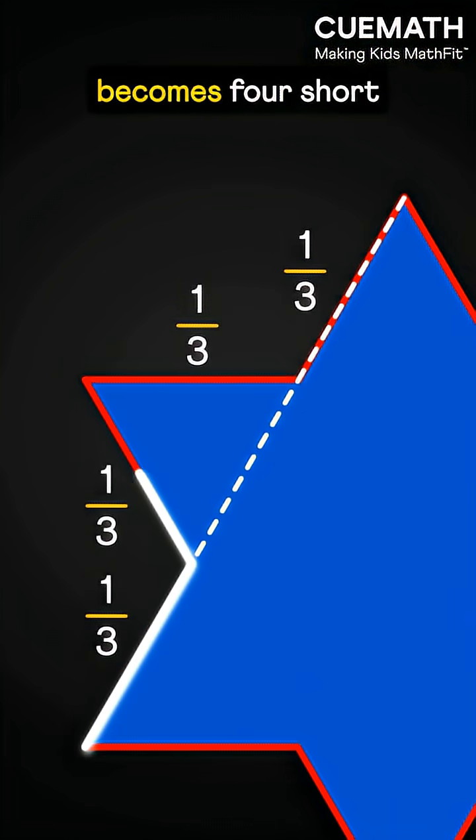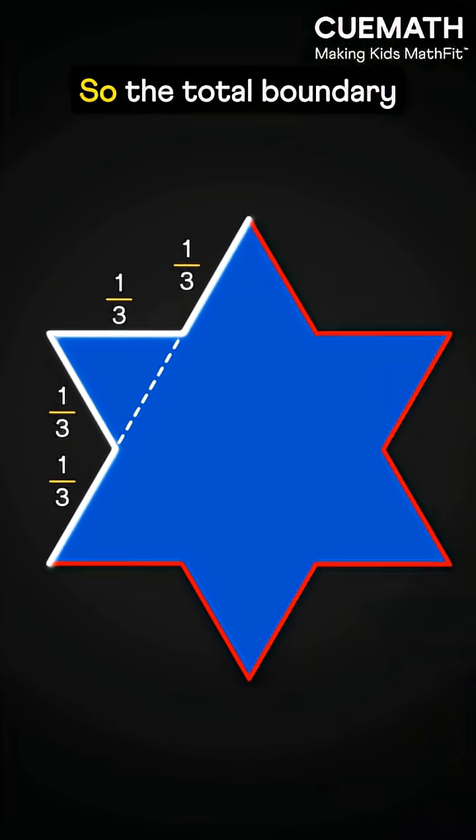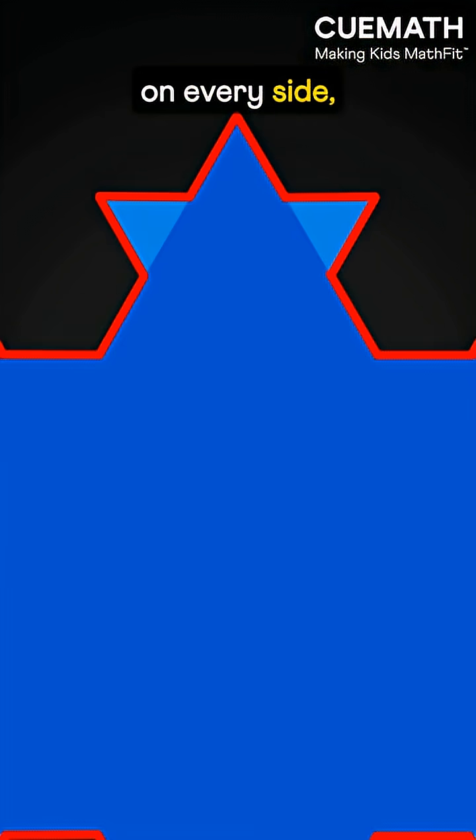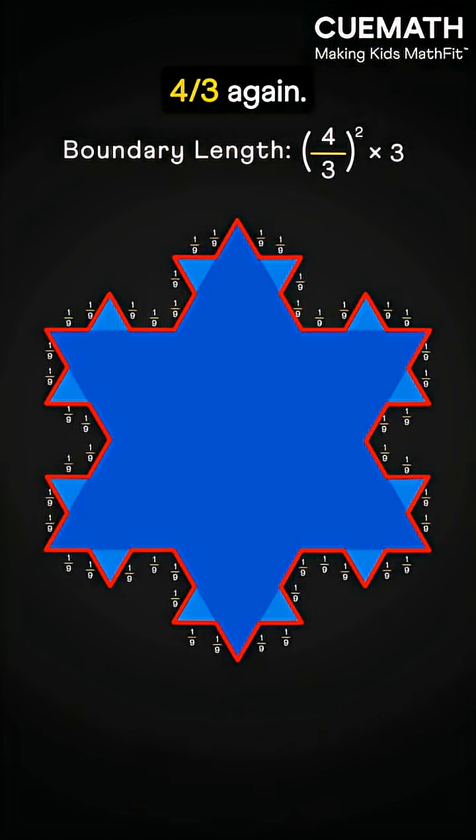One straight side becomes four short zigzag pieces, each one-third the length of the original segment. So the total boundary increases by a factor of four-thirds. Do this again on every side and the total length increases by a factor of four-thirds again.